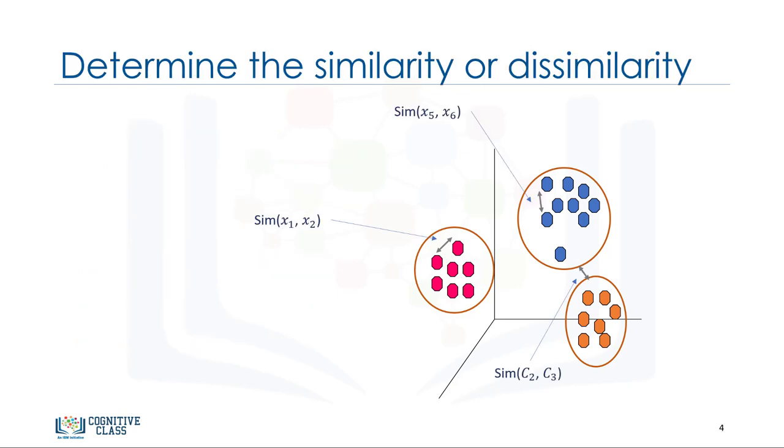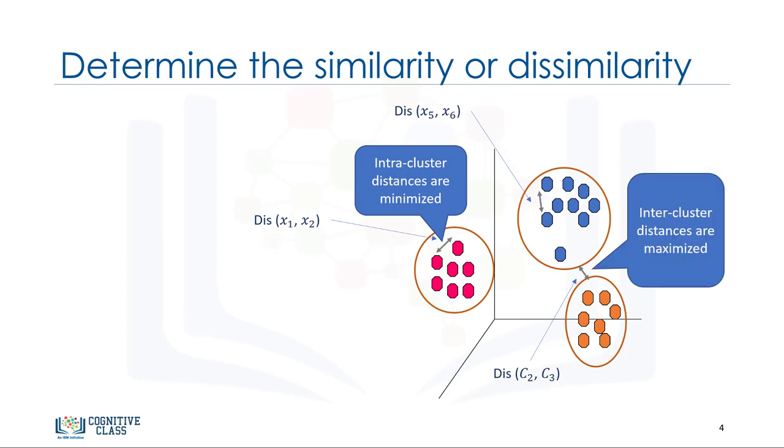Though the objective of k-means is to form clusters in such a way that similar samples go into a cluster and dissimilar samples fall into different clusters, it can be shown that instead of a similarity metric, we can use dissimilarity metrics. In other words, conventionally, the distance of samples from each other is used to shape the clusters. So, we can say k-means tries to minimize the intra-cluster distances and maximize the inter-cluster distances. Now, the question is, how can we calculate the dissimilarity or distance of two cases, such as two customers?